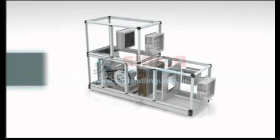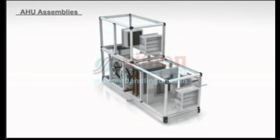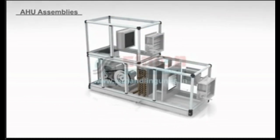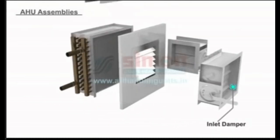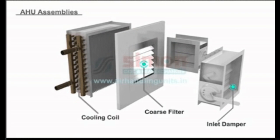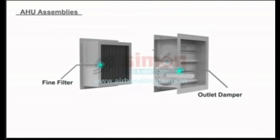An air handling unit is a heating, ventilation, and air conditioning system to regulate and circulate air within a building. It consists of several components, including a fan, heating and cooling elements, filters, dampers, and actuator valve.